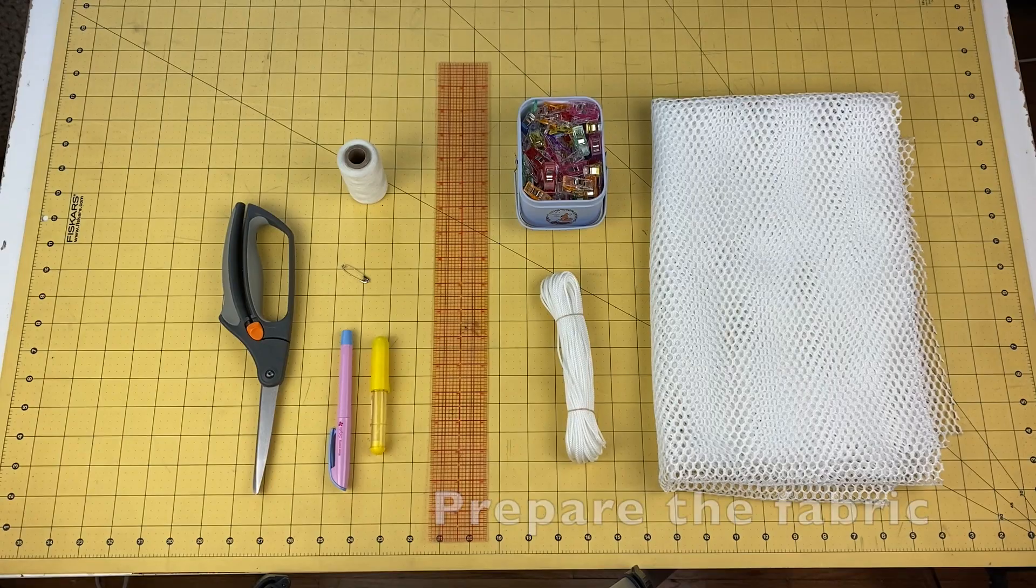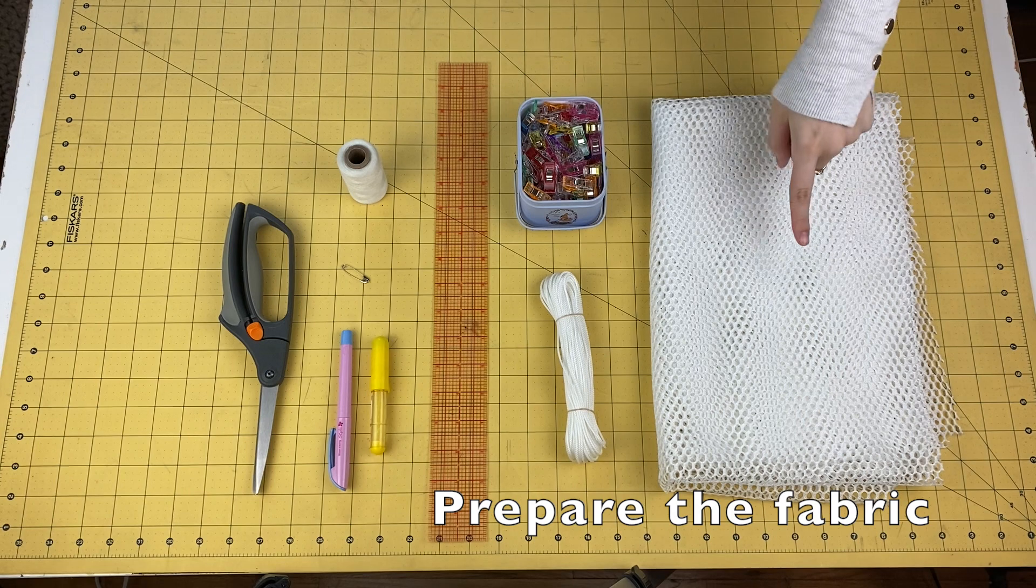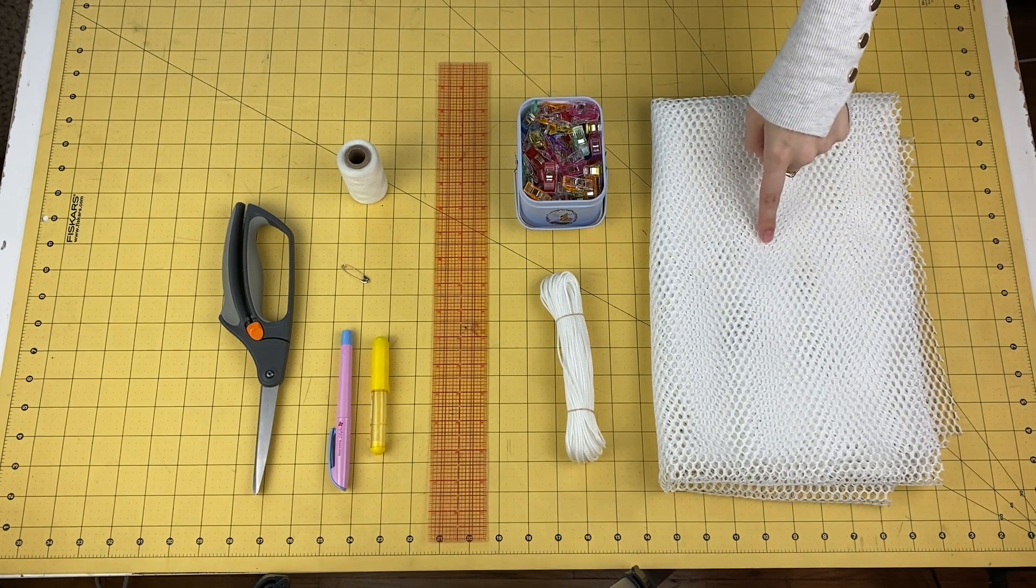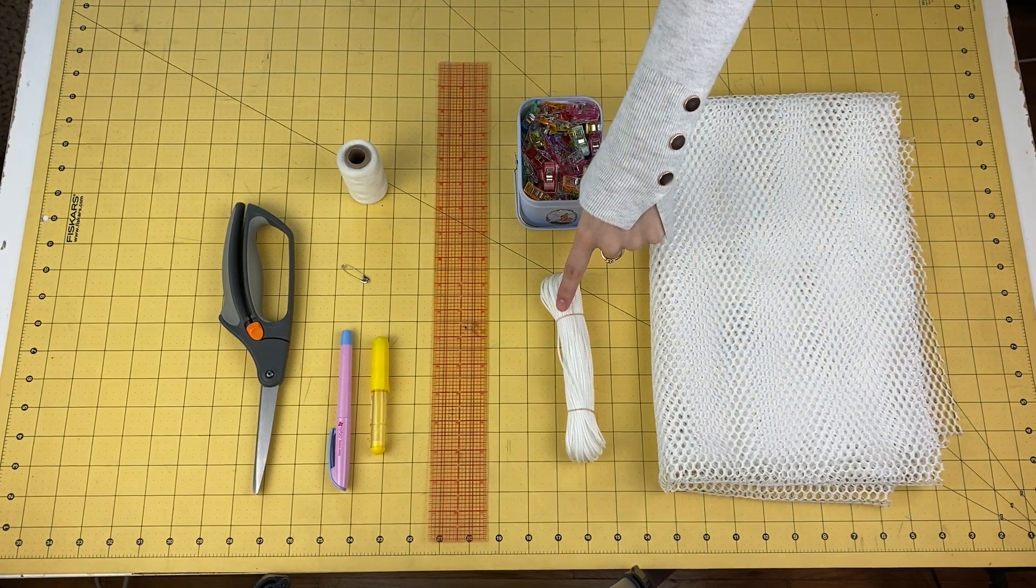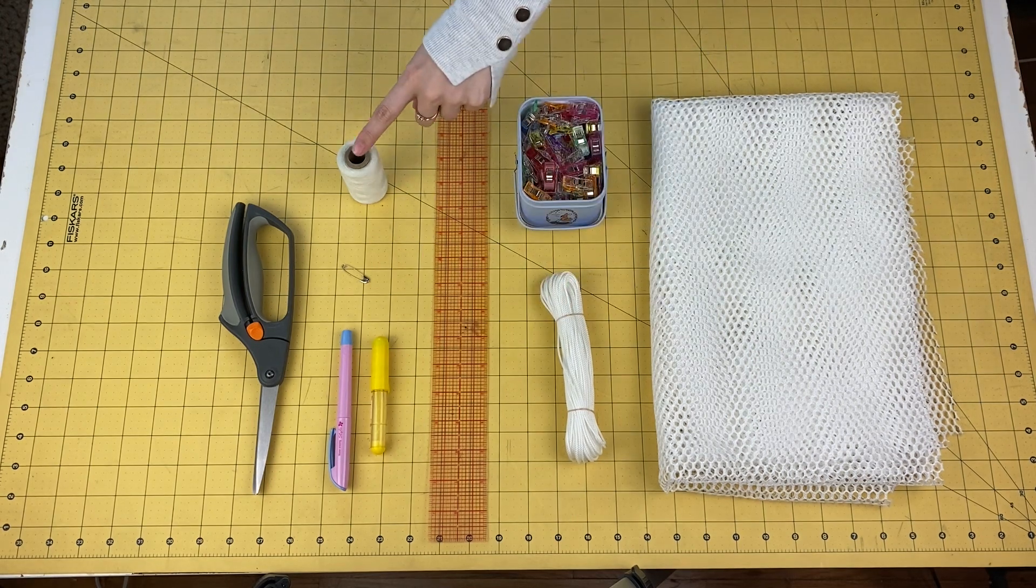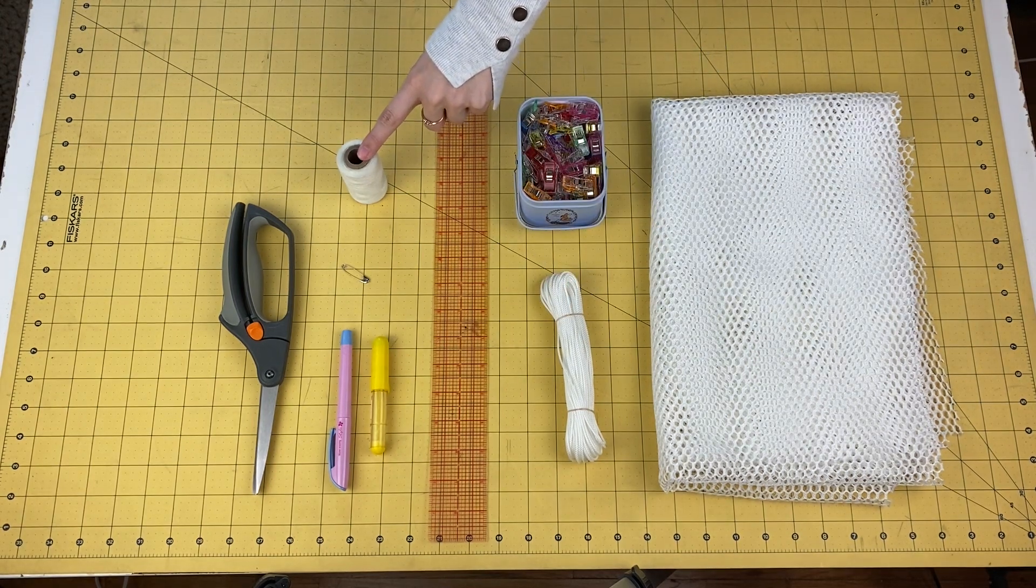Let's get started. You will need half a yard of polyester hex mesh, 60 inches total of 1.5 millimeter white drawstring cord, thread in coordinating colors,